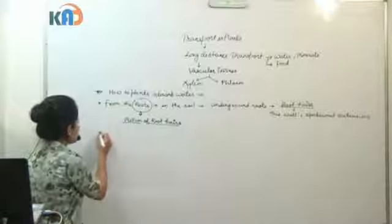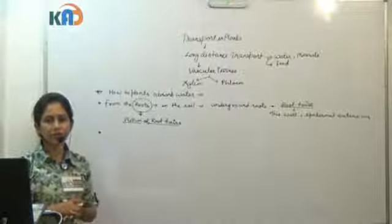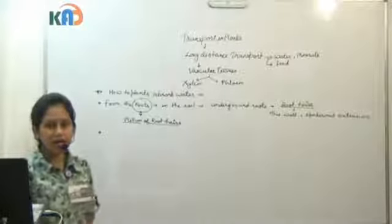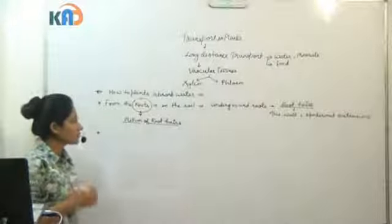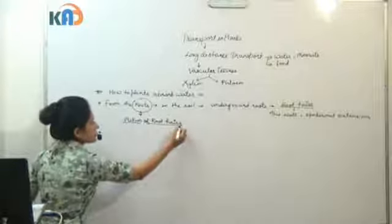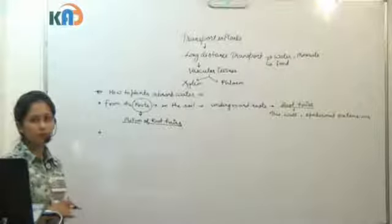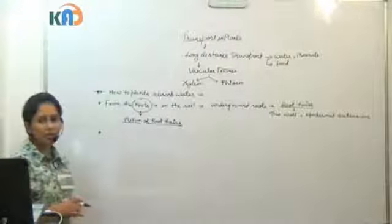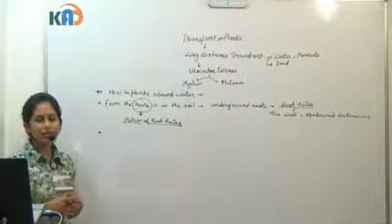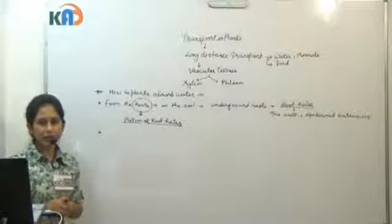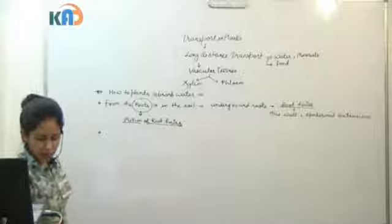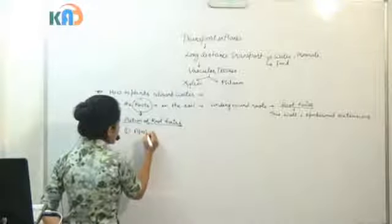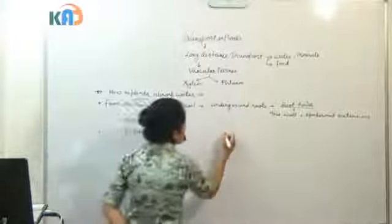The endodermal cells contain special types of cells that are suberinized, known as Casparian cells. The Casparian strip contains suberin, which is a hydrophobic substance and does not allow water to pass through. So water cannot cross the Casparian strip directly — therefore we discuss two paths of transport: the apoplast path and the symplast path.